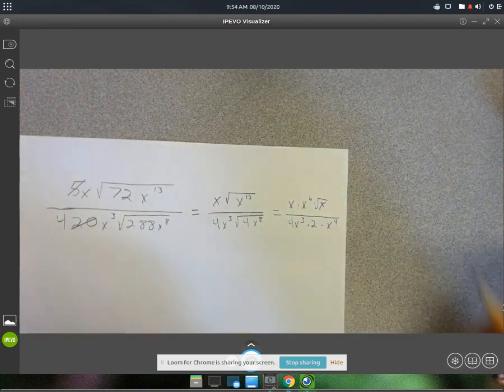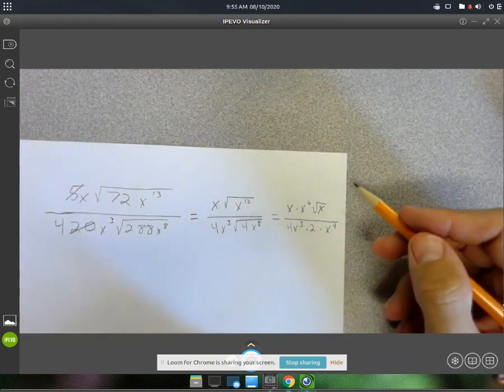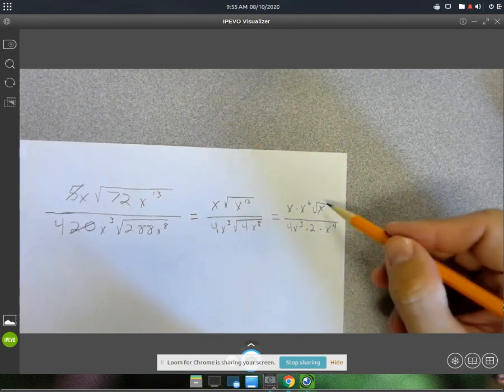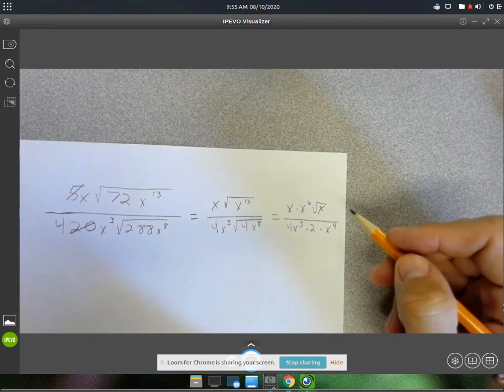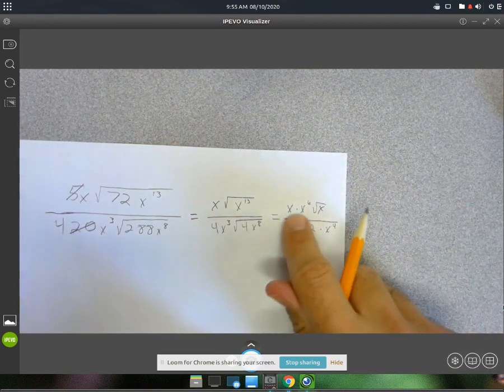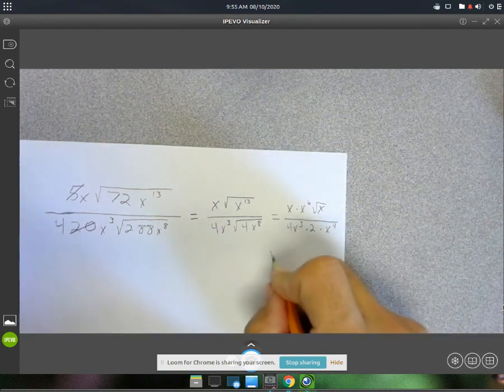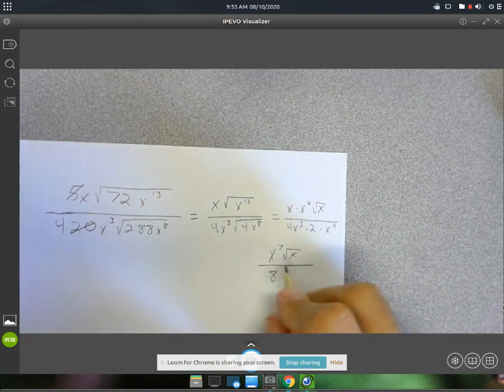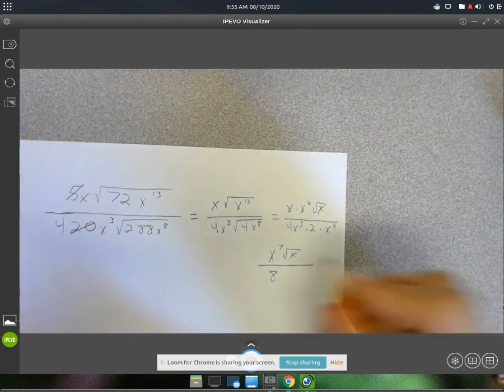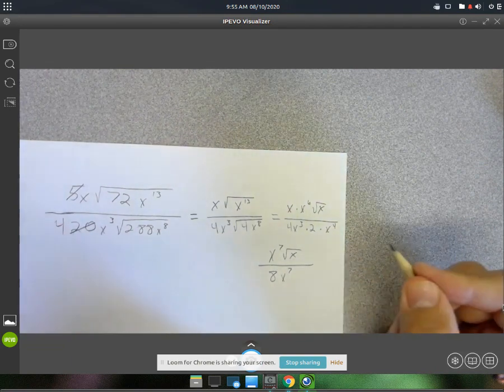What we want to do is use our rules for exponents to simplify the numerator with the denominator. So in the numerator, on the outside, we have 7x's, so x to the 7th. And on the denominator, we've got 4 times 2 is 8. And then we have 7x's as well, x to the 7th.